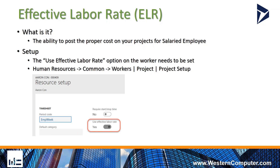For salaried employees, they get paid the same amount no matter how many hours they work. They can work 60 hours in a week or 20 hours — they're going to get their salary either way. So the cost associated with the hours they work should fluctuate based on the amount of time they charge in the system for that particular week.